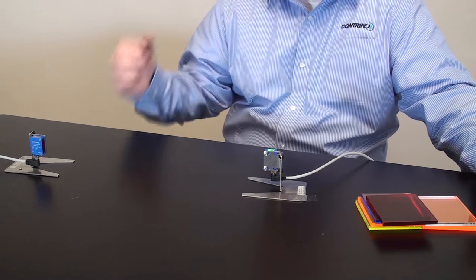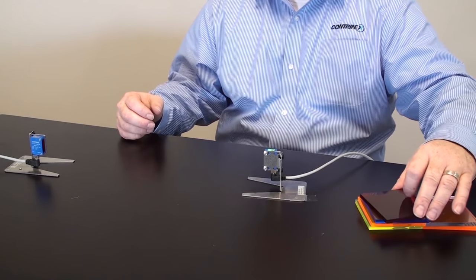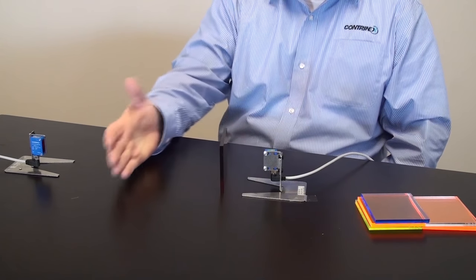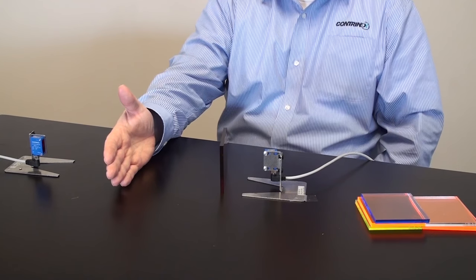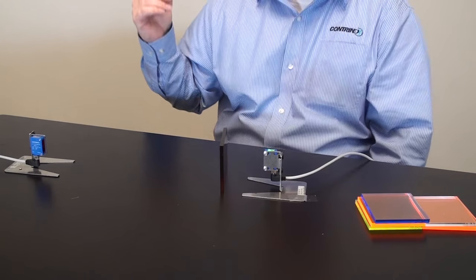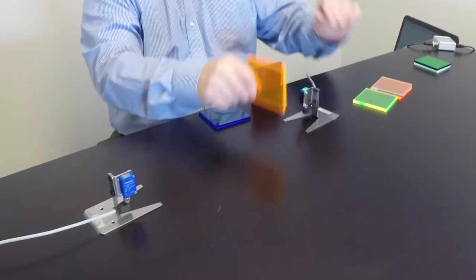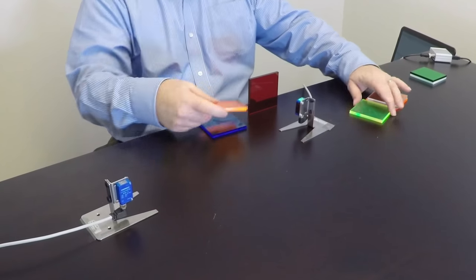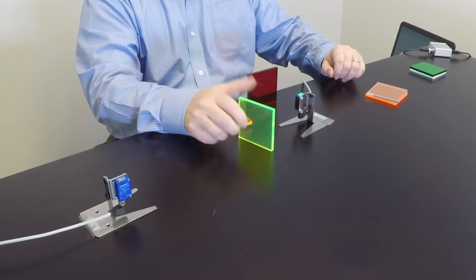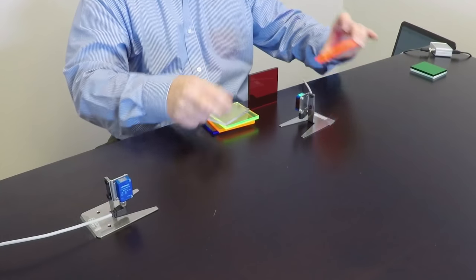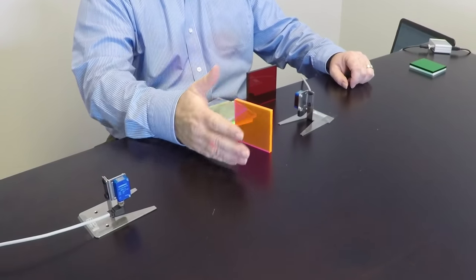These are the C23s and I'll show you detection through translucent products. This is red and you can see that I can trigger the device through there or I can ignore it. This is blue, blue, orange, greens, clear of course, and the pink.